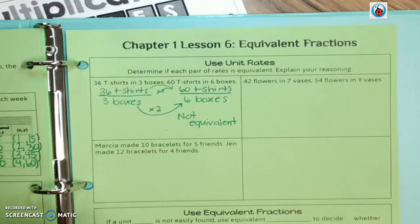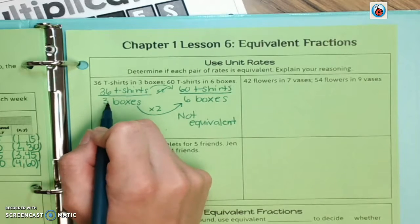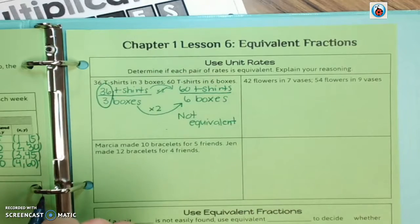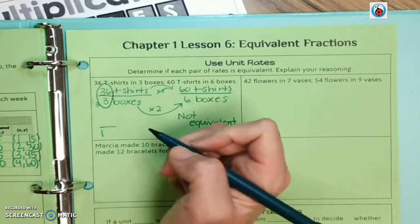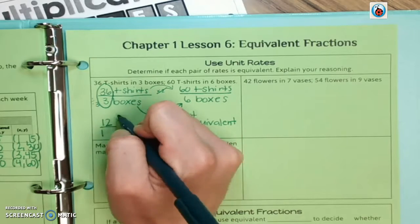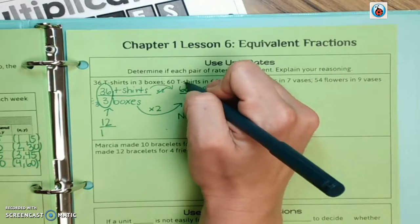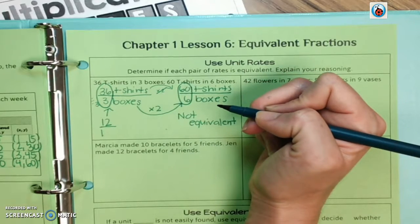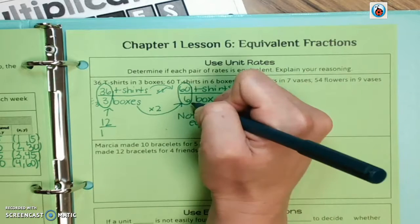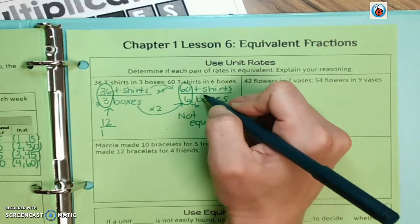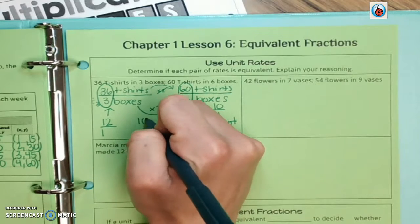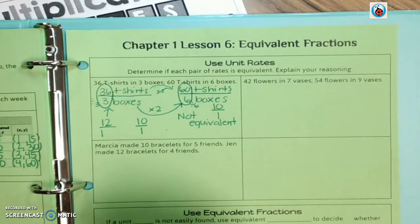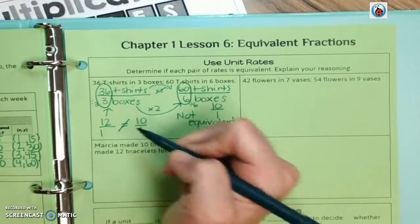The other way that you could do it is find the unit rate. Remember to find the unit rate, we divide by the bottom number. So we would be dividing by 3. 3 divided by 3 is 1, 36 divided by 3 is 12. So we have 12 over 1 for this one. Over here, we'd be looking at 60 and 6. 6 divided by 6 is 1, and 60 divided by 6 is 10. 12 over 1 and 10 over 1 are not the same number, so it is not equivalent.